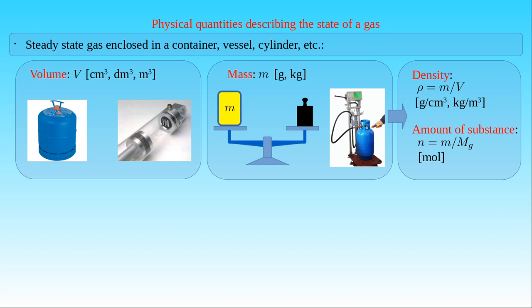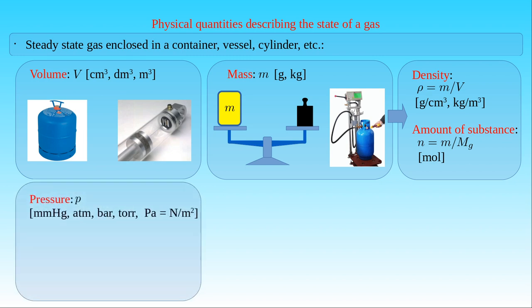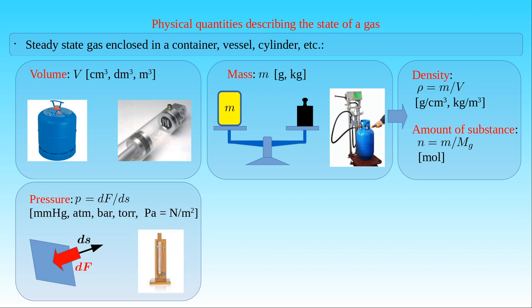The next physical property of a gas is the pressure, defined as the force per unit perpendicular area over which the force is applied. In the definition we can use the normal vector dS with the length of the area element, which has a direction perpendicular to the area element. We also use the infinitesimal force dF exerted on the area element by the gas, which has the direction opposite to the normal vector dS. Then the pressure of a gas is just the derivative of the force F with respect to the area S on which the force is exerted. The gas pressure can be measured by barometers applying different principles. Pressure has a great variety of units, such as millimeter of mercury, atmosphere, bar, torr, or pascal, that is newton per square meter.